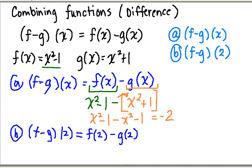What this tells me to do is go to my f function, wherever I have an x, I'm going to plug in a 2. So up here, f of 2 is equal to 2 squared minus 1, or 4 minus 1, or 3.